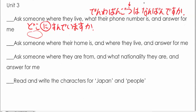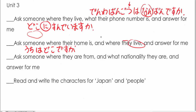For the phone number, 'denwa bango wa' — you put your answer right in where the 'nan' is. For where you live: 'uchi wa doko desu ka.' This is also for your address, so it covers both where you live and your address.